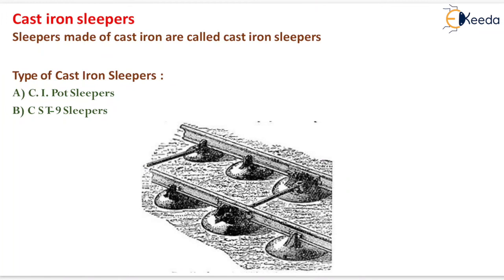The next type is cast iron sleepers. Sleepers made of cast iron are called cast iron sleepers. Types of cast iron sleepers are CI pot sleepers and CST-9 sleepers.